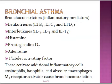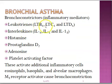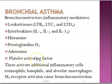Which are those bronchoconstrictors? We have the leukotrienes — LTC4, LTD4 — interleukins, histamine, prostaglandins, and PAF. These also activate additional inflammatory cells such as eosinophils, macrophages, all of which contribute to the inflammation of the airways.